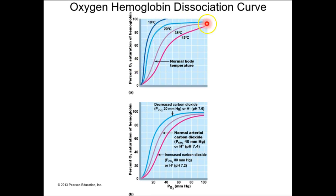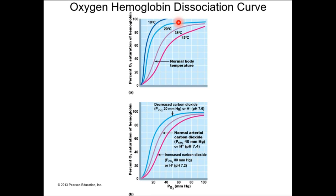In cold temperatures — hypothermia — you're going to have the opposite effect. You're going to have a left shift, which means that oxygen will be bound to hemoglobin more readily, and that means there's going to be less delivery of oxygen into tissues. It's going to be too tightly connected to hemoglobin.